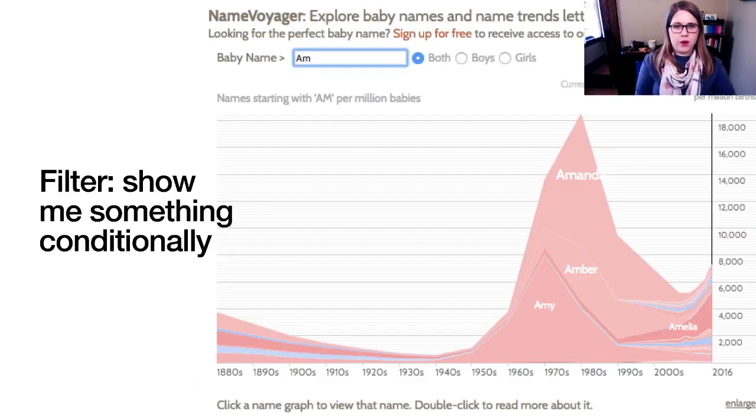Filter would be some way of showing something conditionally. I think of the baby name Voyager, which lets you start typing your name in, and then it shows you the graph as you go. So this is the graph with just the letters AM, and you can really see the peak of babies named Amanda kind of around the time that I was born. Amelia was not nearly as popular in that time period.